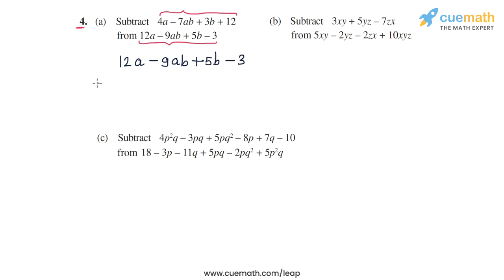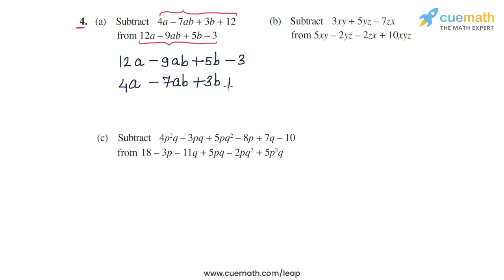Now let's write the first expression below the second expression such that the like terms are written one below the other. So we have 4a written below 12a, then minus 7ab written below minus 9ab, then 3b written below 5b, and then plus 12.